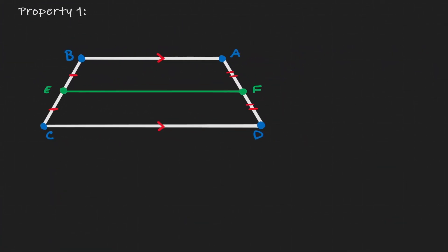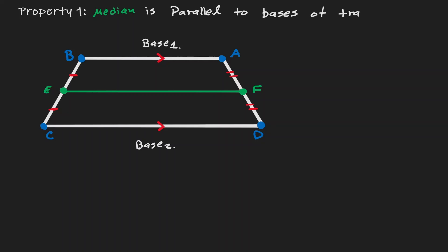Let's start by labeling our bases. The first property says that the median EF is parallel to the bases of the trapezoid. We can reflect this property by saying that EF is parallel to BA, and also EF is parallel to CD. This property is always true.